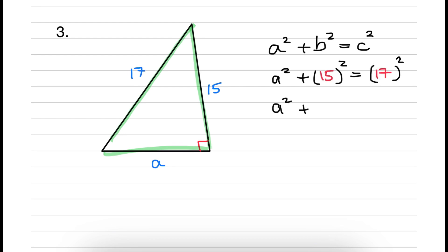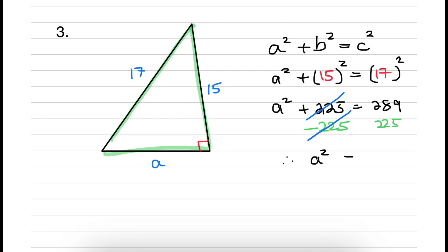15 squared is 225 and 17 squared is 289. Now subtract 225 from both sides of the equation — the purpose is to cancel the 225 on the left-hand side — so A squared equals 64. Finding the square root of both sides gives A equal to 8. That's the answer for the shorter side: A is 8 units.